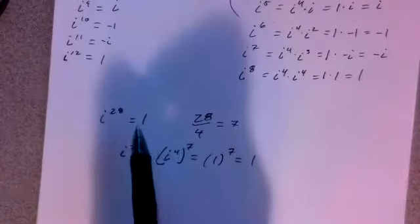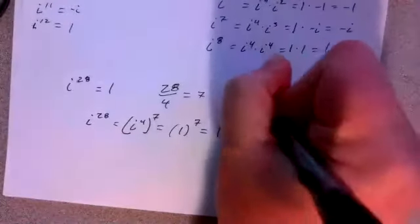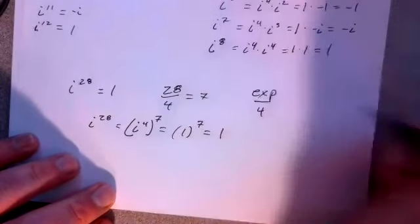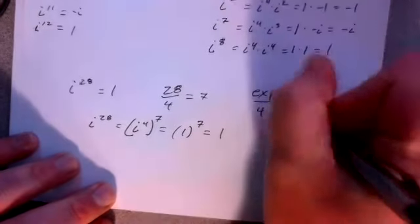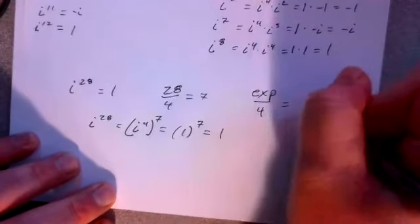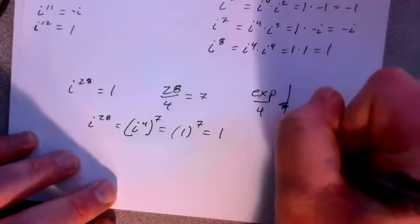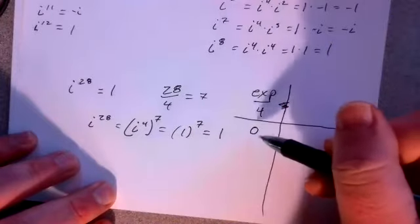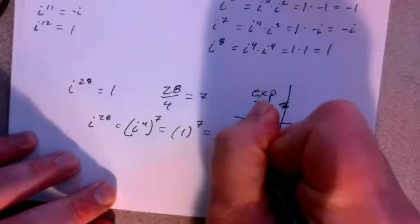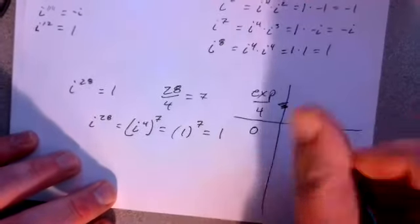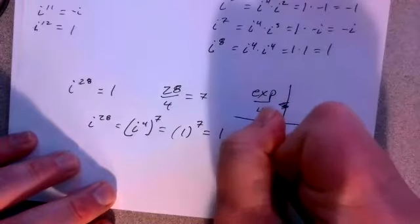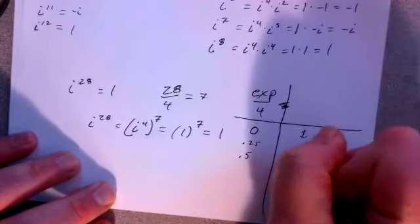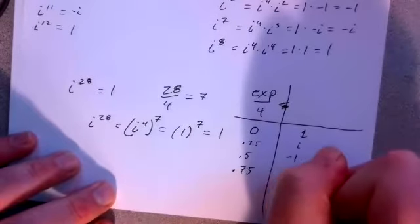There's a little pattern here. You look at the exponent of i and divide it by 4. I'm going to build a chart: if that exponent divided by 4 gives a remainder of 0, it's going to give you 1. If you get a remainder of 0.25, it's going to be i. If you get a remainder of 0.5, it'll be negative 1. If you get 0.75, it's going to be negative i.